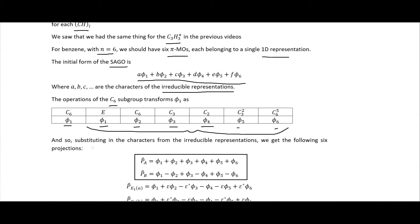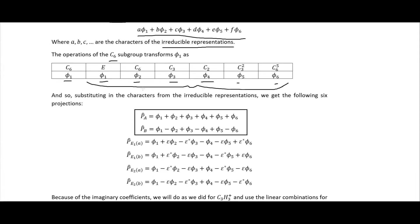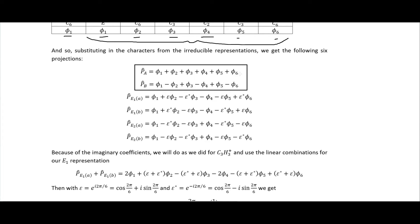And so substituting in the characters from the irreducible representations, which are, you know, like for the A is the 1, 1, 1, 1, 1, and 1, and the B is the 1, -1, 1, -1, and so on, we get these right here. And so I boxed these ones because these are actually our symmetry adapted group orbitals for the PA and PB projection operators here.